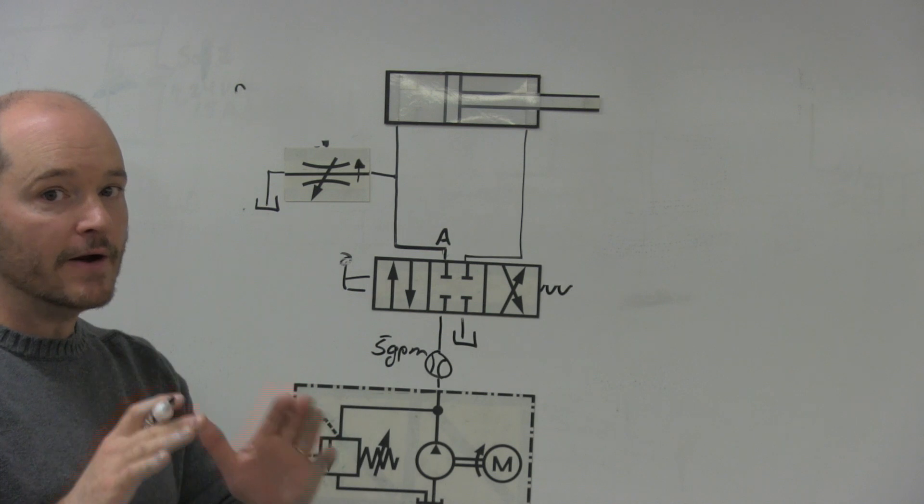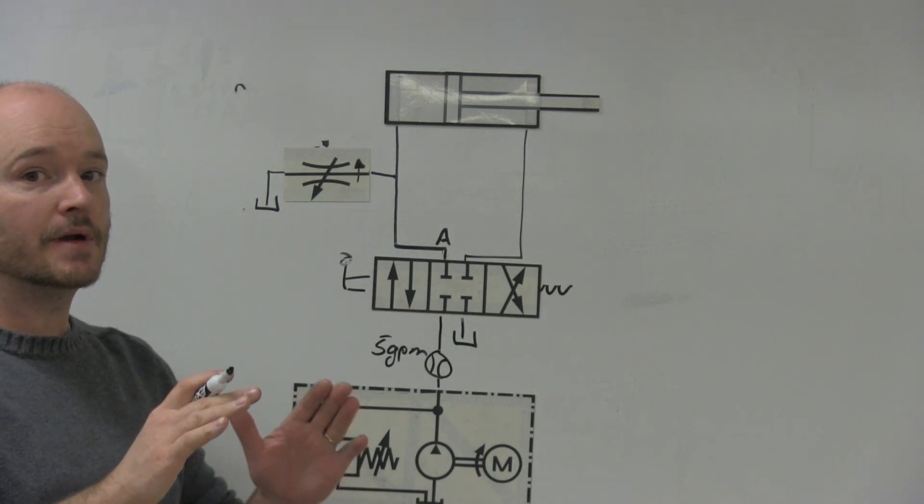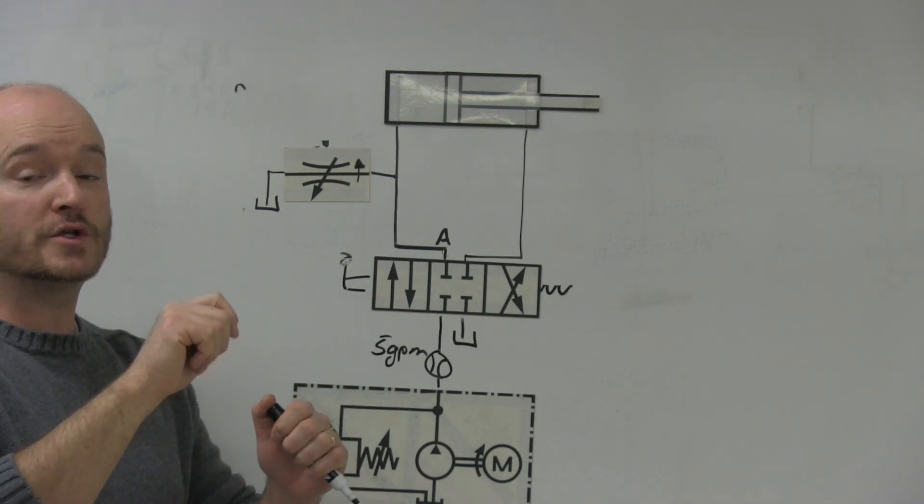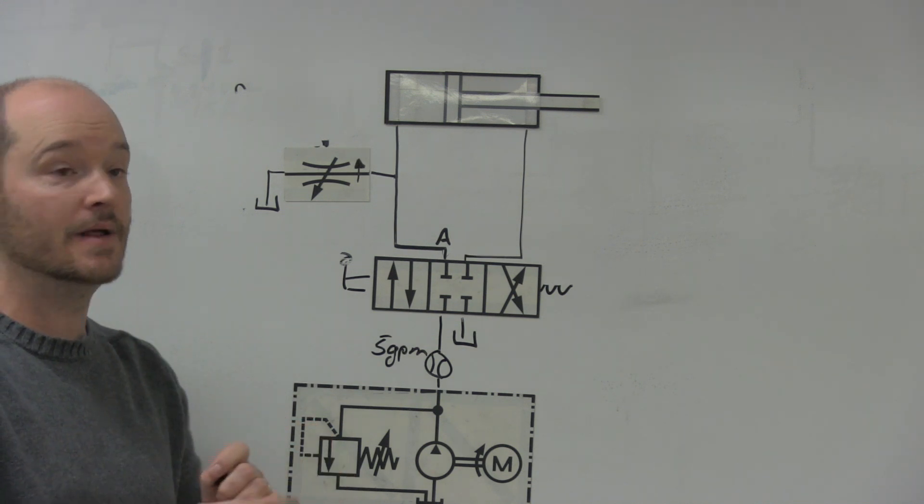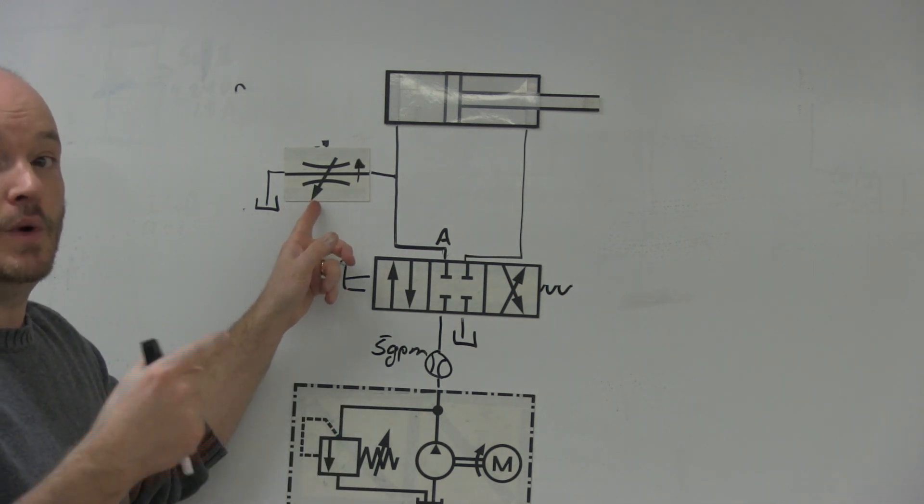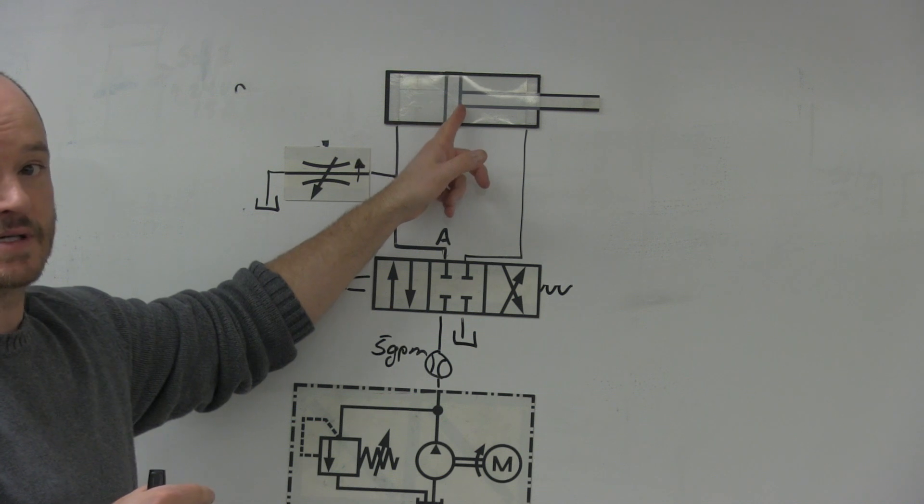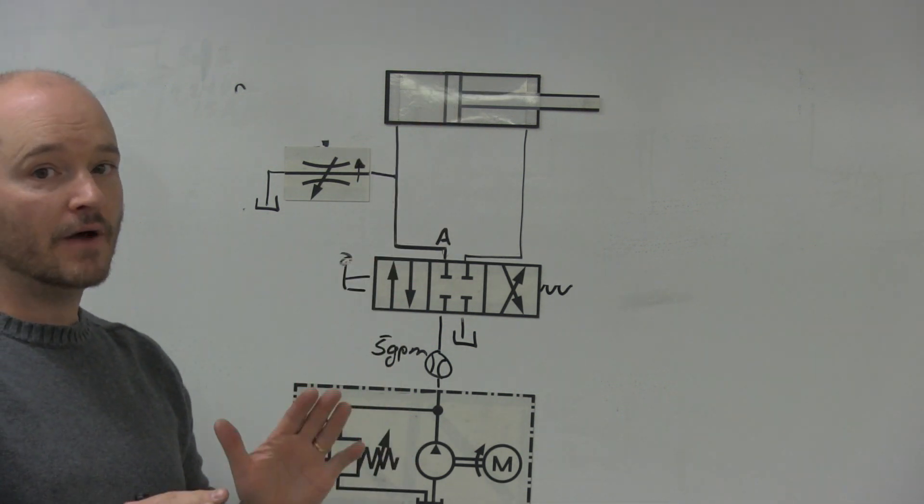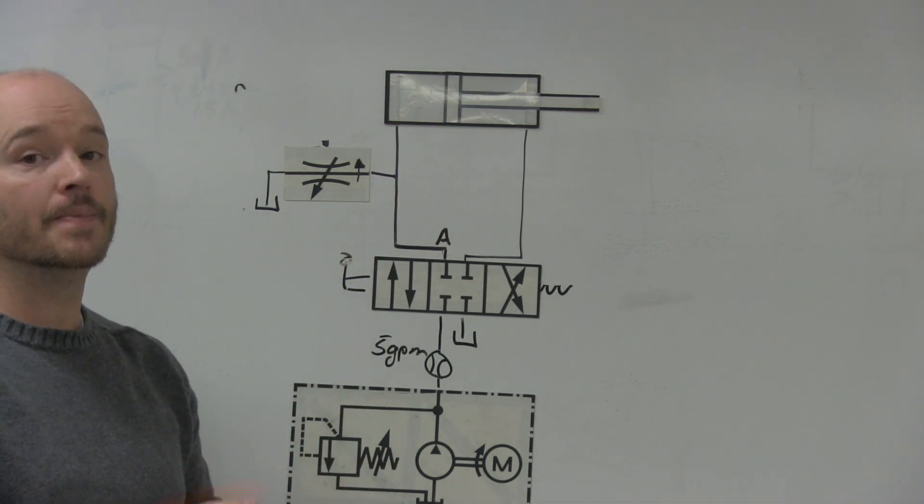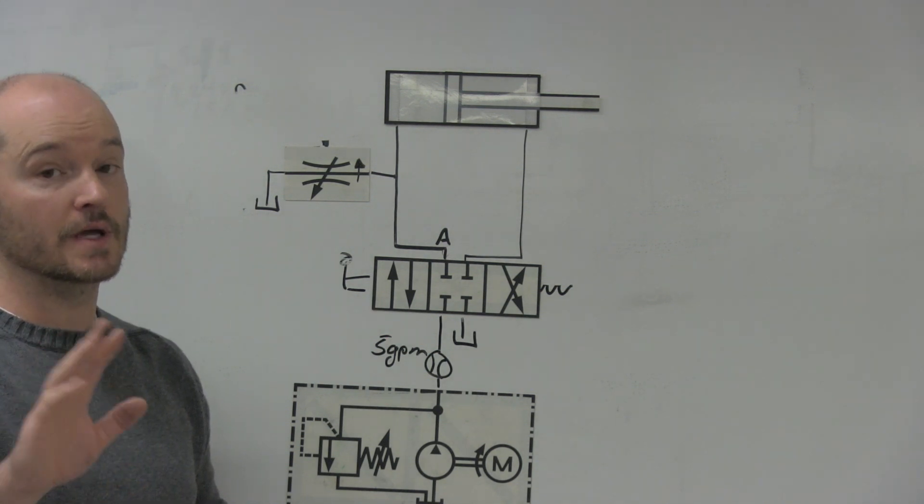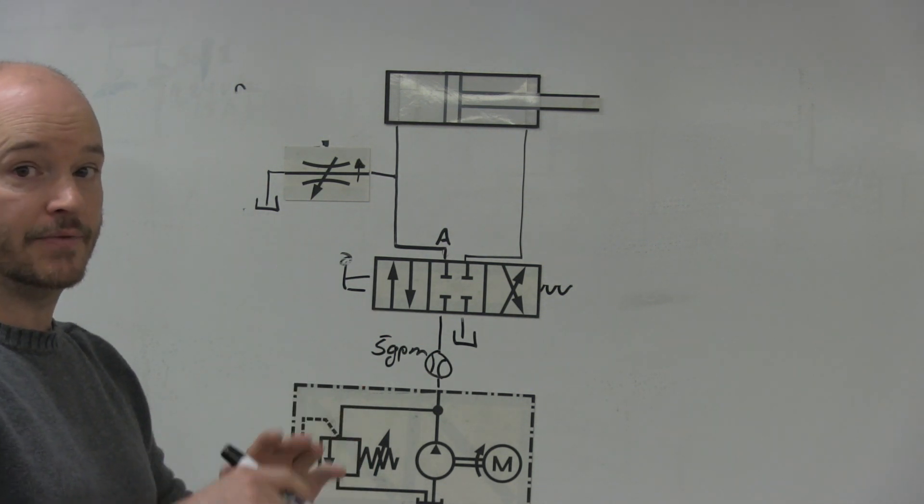So it's very different than meter in and meter out. Because meter in and meter out, you just have to focus on which one to tighten to slow it down in the right direction. Here, it's the opposite. We need to open this up to slow the cylinder down. Again, bleed off circuits are not super accurate, but they are used out in industry. So be aware of them if you ever see them out there.